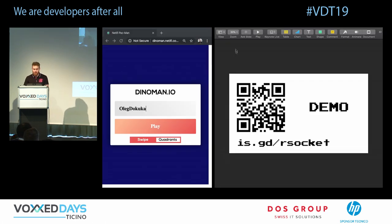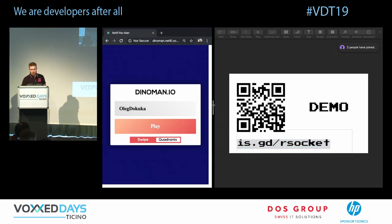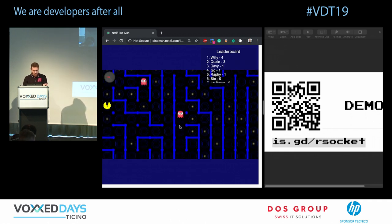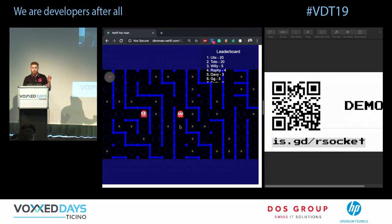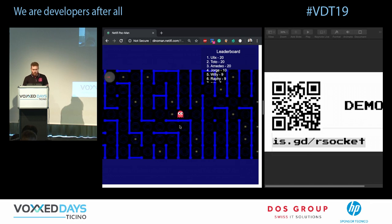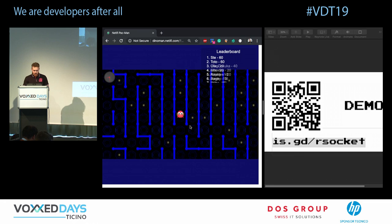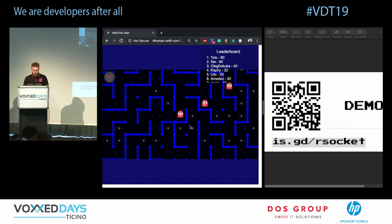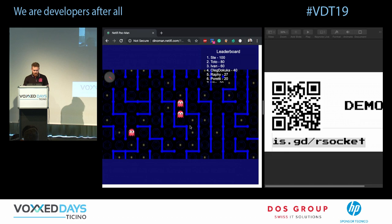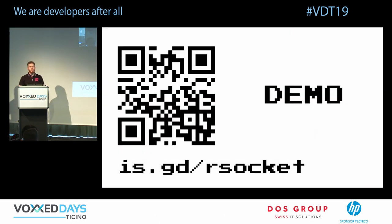Let's try the RSocket implementation and see if it's better. Yeah — it's better! Do you see? No lag, smooth movement. Of course there are some latency spikes because I'm on Wi-Fi, but it's much better. Someone is moving almost without lag — you can see the ghost moving quickly.